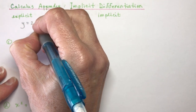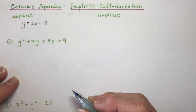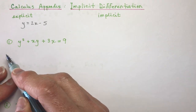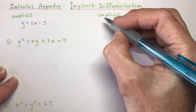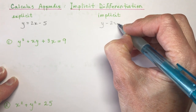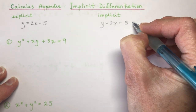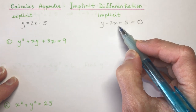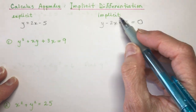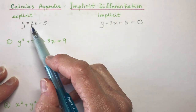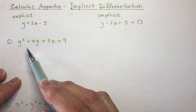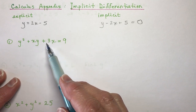An explicit equation has y isolated on one side and the variables and constants on the other. An implicit equation is something like moving everything to one side — it's not telling you what y equals, it says y minus 2x plus 5 equals 0. So explicit means y is isolated.